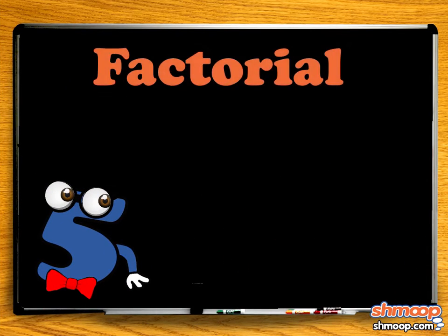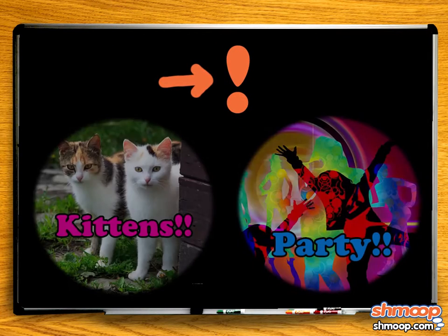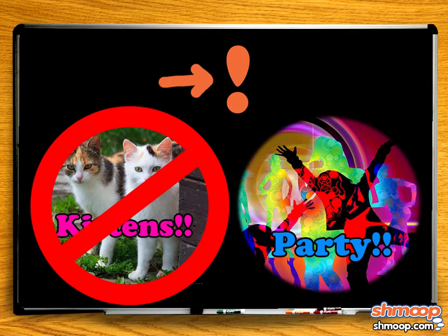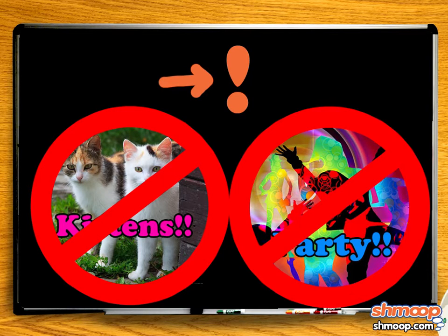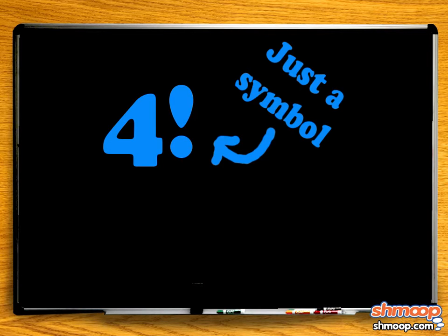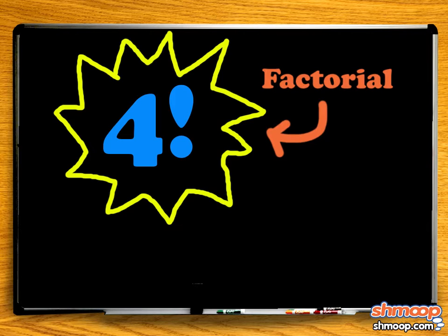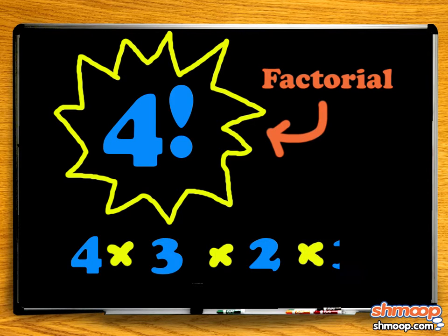A factorial, as my friend here mentioned, ends in an exclamation point. However, the exclamation point, for once, is not being added for emphasis or because factorials are particularly exciting. It is just a symbol which indicates that the number you are dealing with is, in fact, a factorial. For example, the number four factorial really represents four times three times two times one.